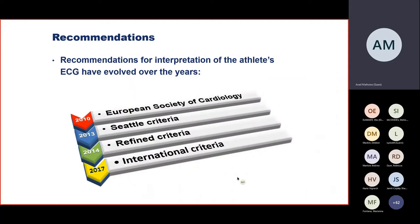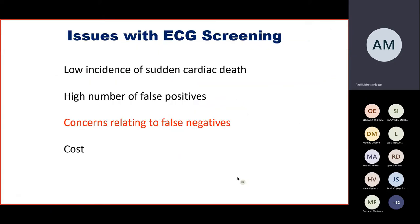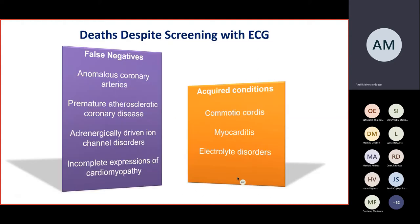Taking ethnicity-driven factors and age-related ECG changes like the juvenile pattern into account, recommendations for interpretation of the athlete's ECG have evolved over the last decade. Applying the latest international criteria, we can see that the false positive rate falls to as low as 1.7% amongst white athletes and just 3.6% amongst black young athletic individuals. The international recommendations strike a very good balance in helping overcome the challenge of false positives. There will always be concerns related to false negatives due to congenital abnormalities, quiescent coronary or channelopathy disease, or acquired conditions such as myocarditis or electrolyte disorders.